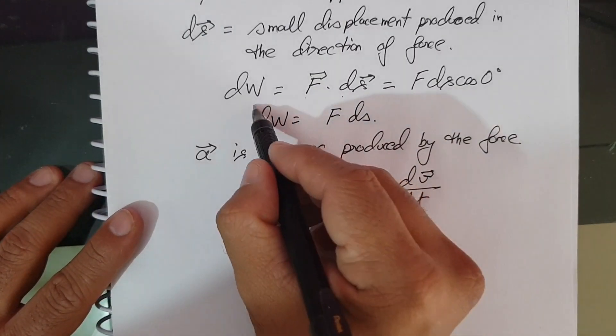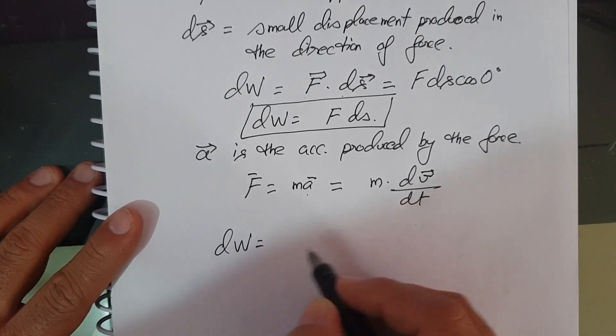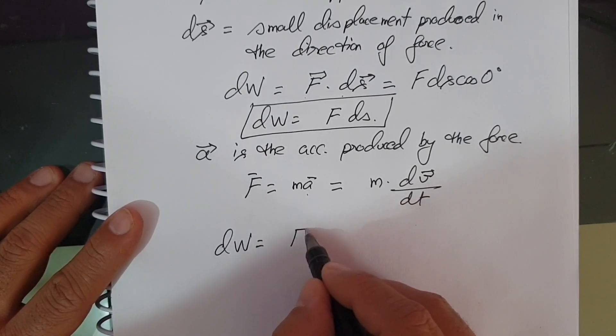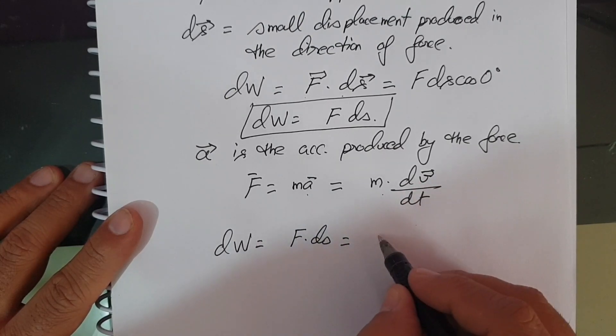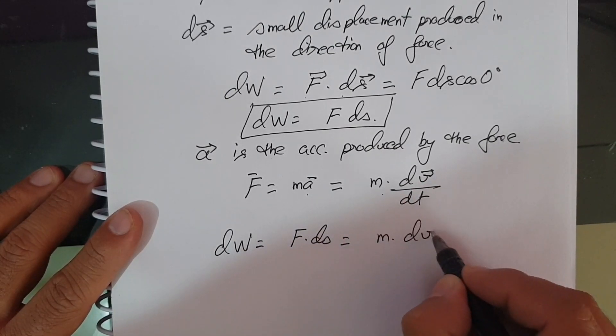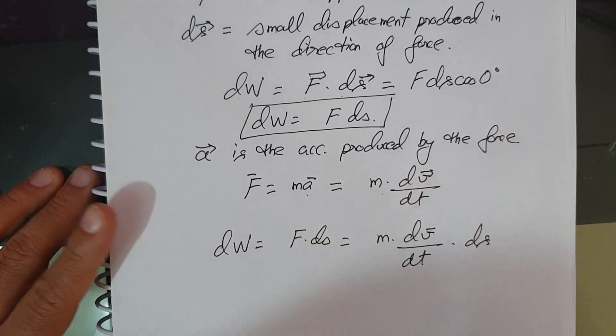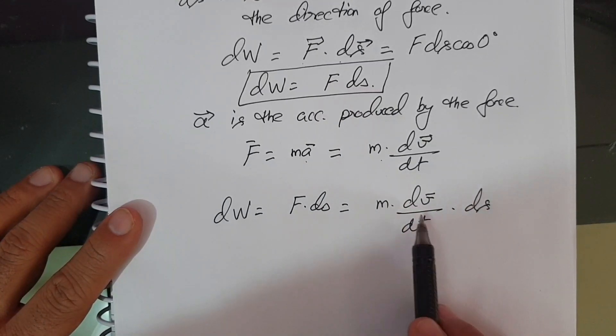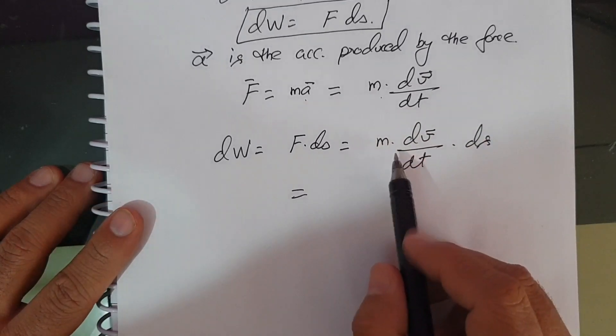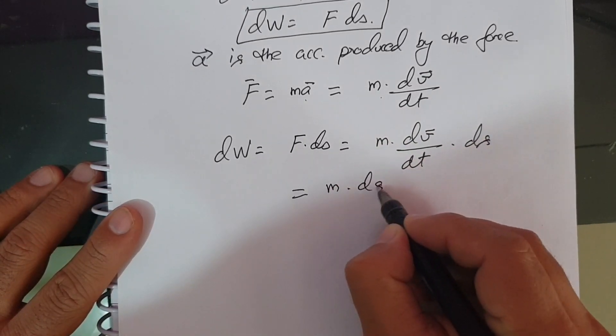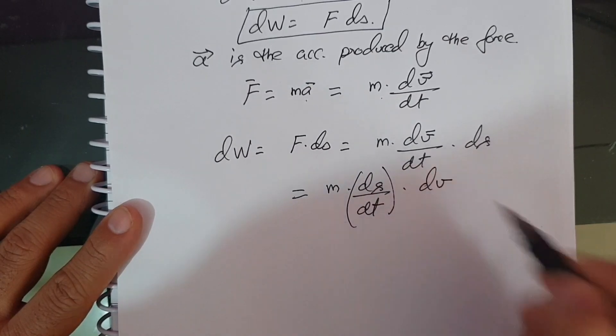From this equation, dW is F dot dS. Substituting the value of F, which is M into dV by dt: M dV by dt into dS. Now we can rearrange it. This can be written as M into dS by dt into dV.